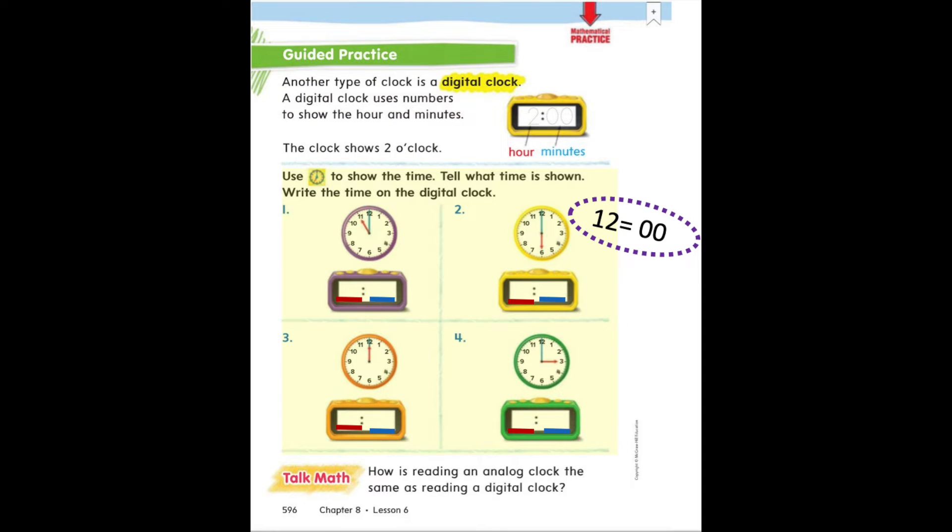For numbers one through four, you are going to read the time on the analog clock, that round clock, and then you are going to write the time on the digital clock. I've added red and blue lines to the digital clock to match up with the red and blue hands on the analog clock.